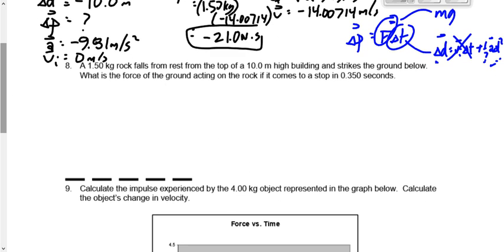Question number eight. This time we're looking at the force of the ground acting on the rock. What's VI? No, it's not zero. VI is negative 14.00714 meters per second. Let's think about that. We're analyzing the collision with the ground. How fast is it moving when it hits the ground? 14. How fast is it moving after it hits the ground? Zero. The VF is zero here.